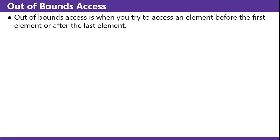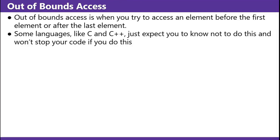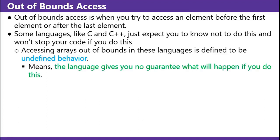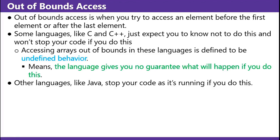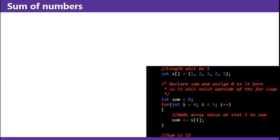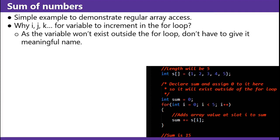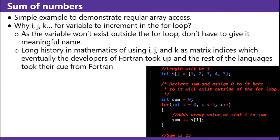Out of bounds access is when you try to access an element before the first element or after the last element. Some languages like C and C++ just expect you to know not to do this and won't stop your code if you do — accessing an array out of bounds in these languages is undefined behavior, meaning the language gives you no guarantee what will happen. Other languages like Java stop your code as it's running if you do this. Why i, j, and k for variables to increment in the for loop? As the variable won't exist outside of the for loop, you don't have to give it a meaningful name. There's a long history of mathematics of using i, j, and k as matrix indices, which eventually the developers of Fortran took up and the rest of the languages took their cue from Fortran.